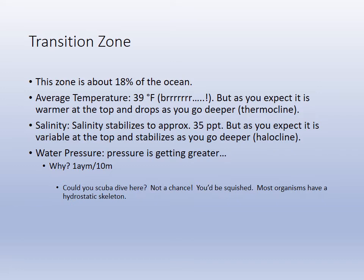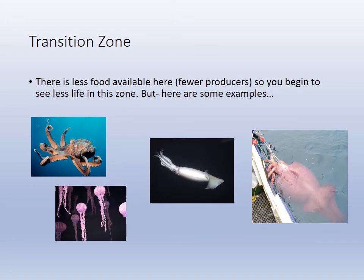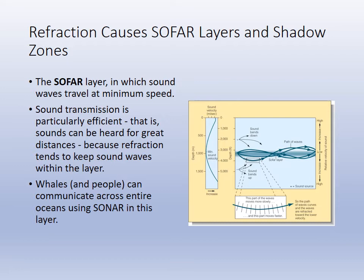In the transition zone, about 18% of the ocean, you drop quickly. Salinity also stabilizes to 35 parts per thousand and water pressure gets greater. Organisms that live there tend to be soft-bodied or have some flexibility because the pressure increases so greatly. There is a narrow band at about a thousand meters called the SOFAR channel where sound travels the slowest but perpetuates over great distances, reflected downward by the warmer water but reflected upward by the pressure. Whales and submarines use this area to communicate over hundreds of miles — the SOFAR channel is very efficient for sound transmission.